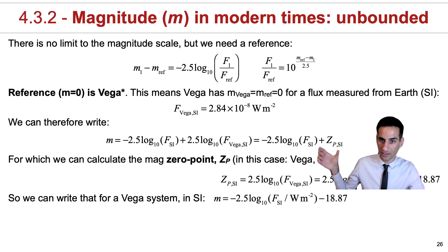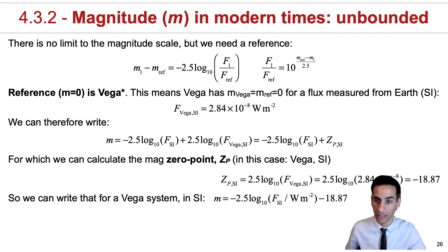And all we're doing is this term of plus 2.5 log 10 flux of Vega, we're just calling it the zero point of the Vega system. Because this is a fixed value, the flux that reaches the Earth, we can actually calculate it. And it turns out that this zero point is minus 18.87 in the Vega system.